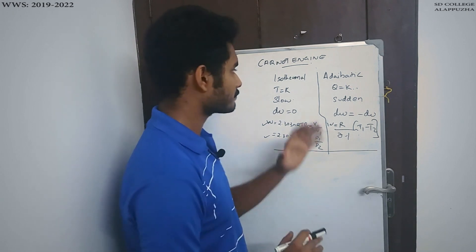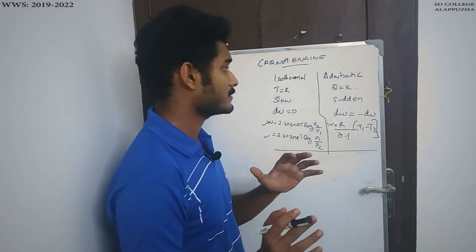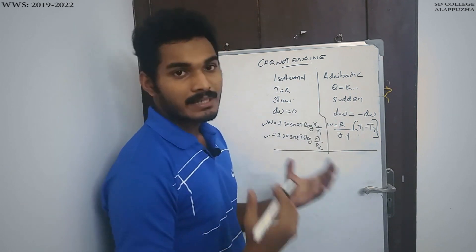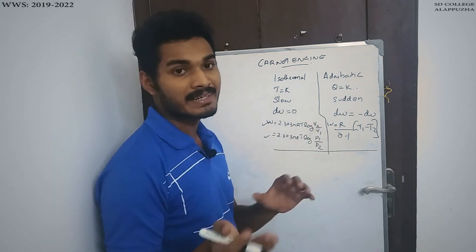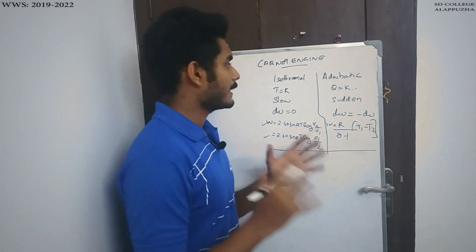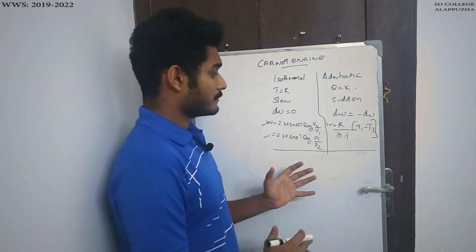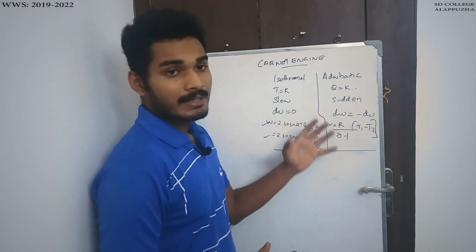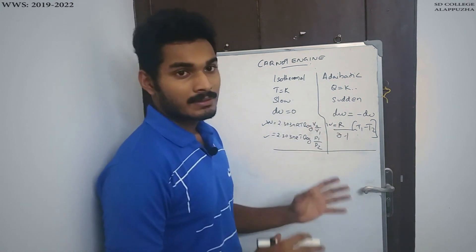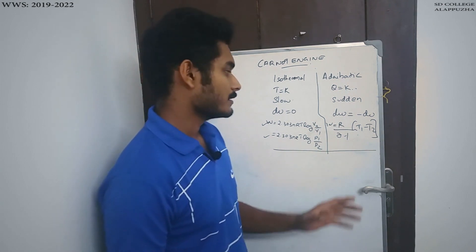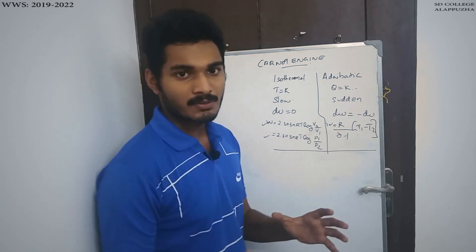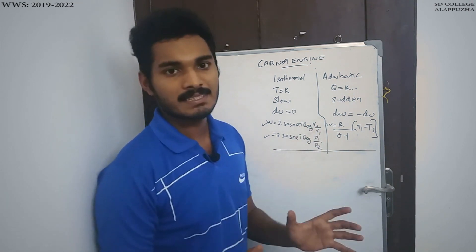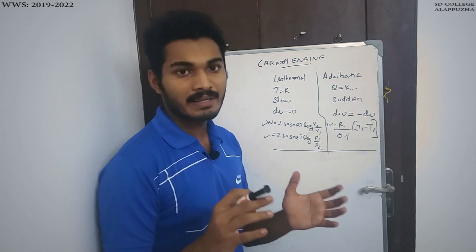In the adiabatic process, the heat is constant. It is a sudden process. Here, dW is equal to minus dU. The work done in the adiabatic process is R by gamma minus 1, multiplied by T1 minus T2, where T1 and T2 are the initial and final temperatures, R is the gas constant, and gamma is Cp by Cv.